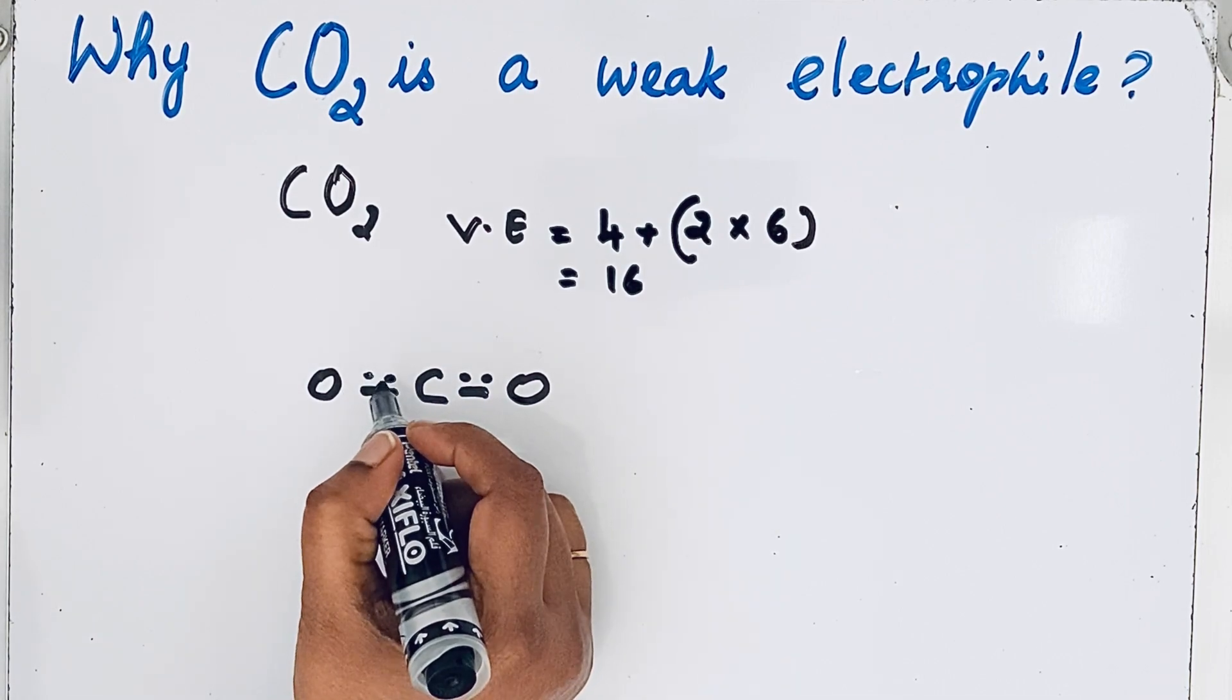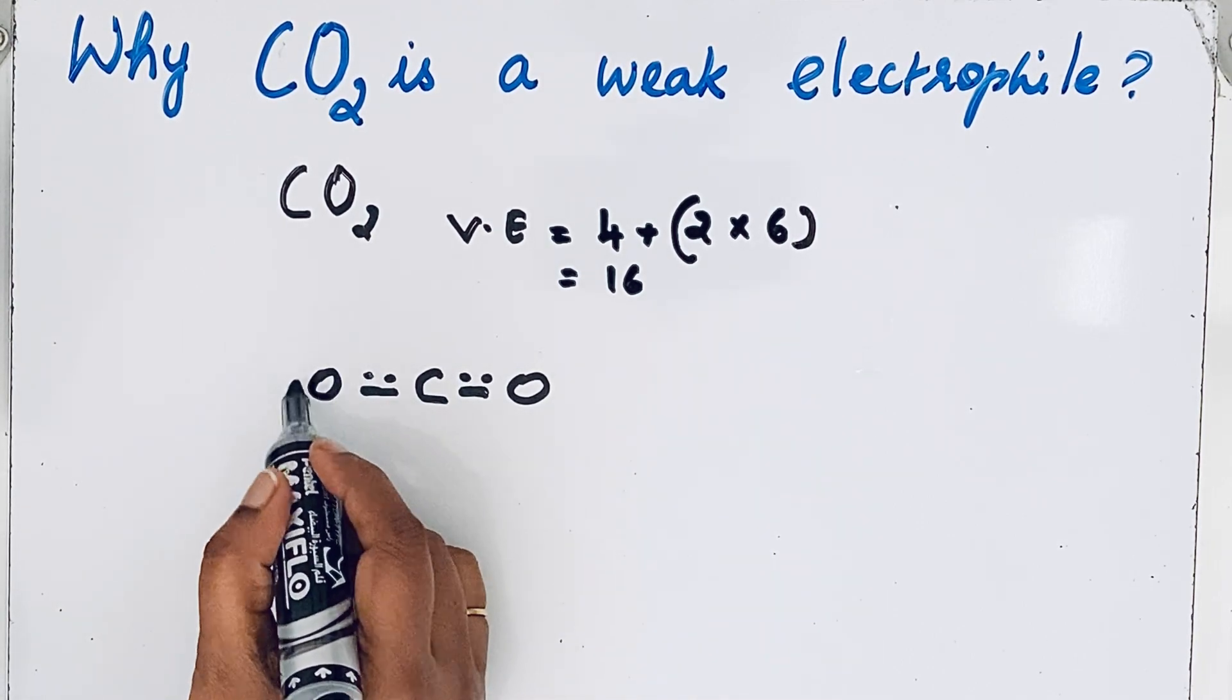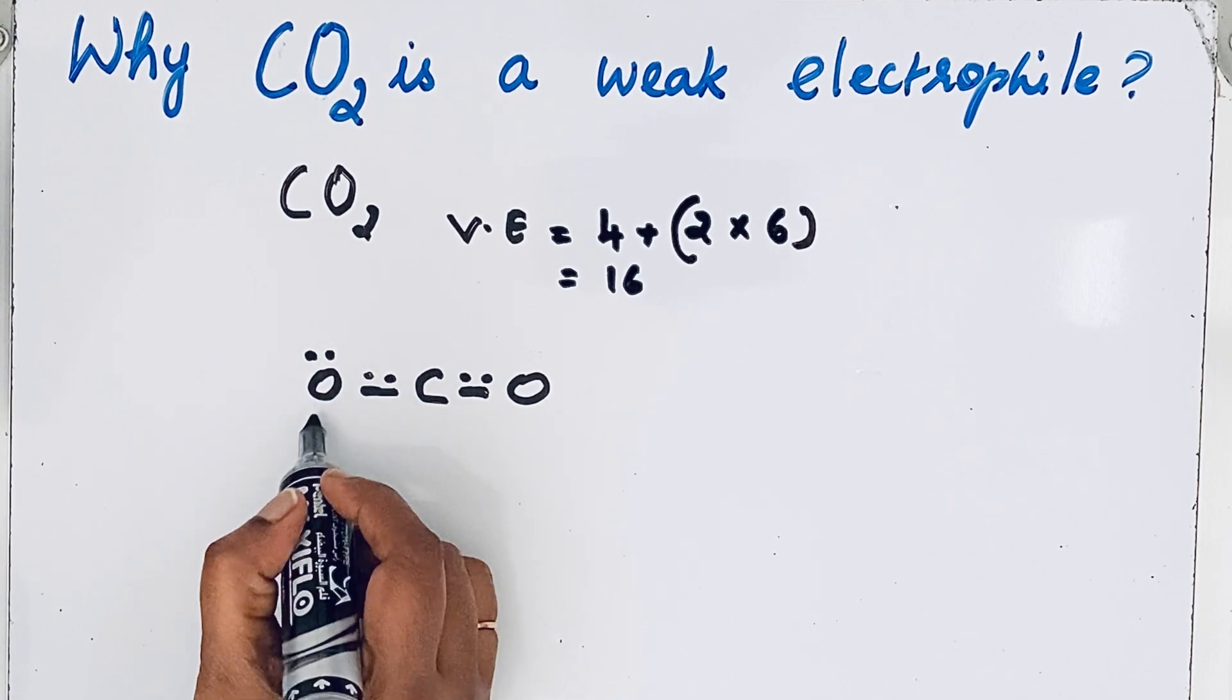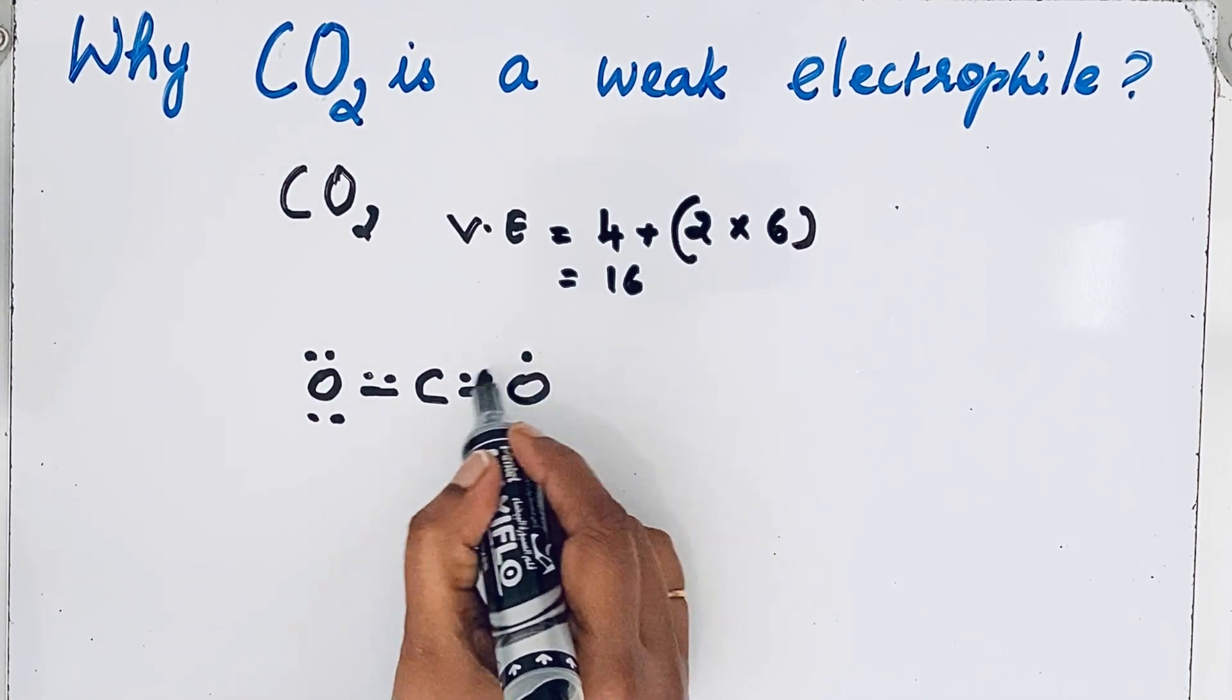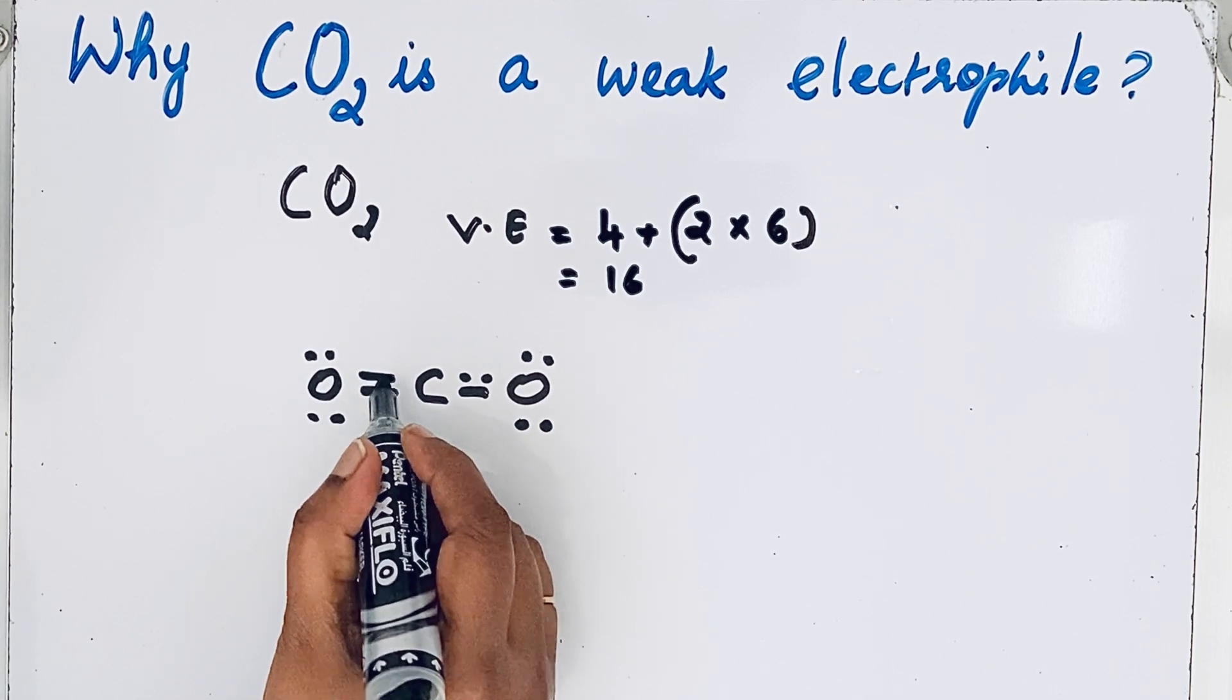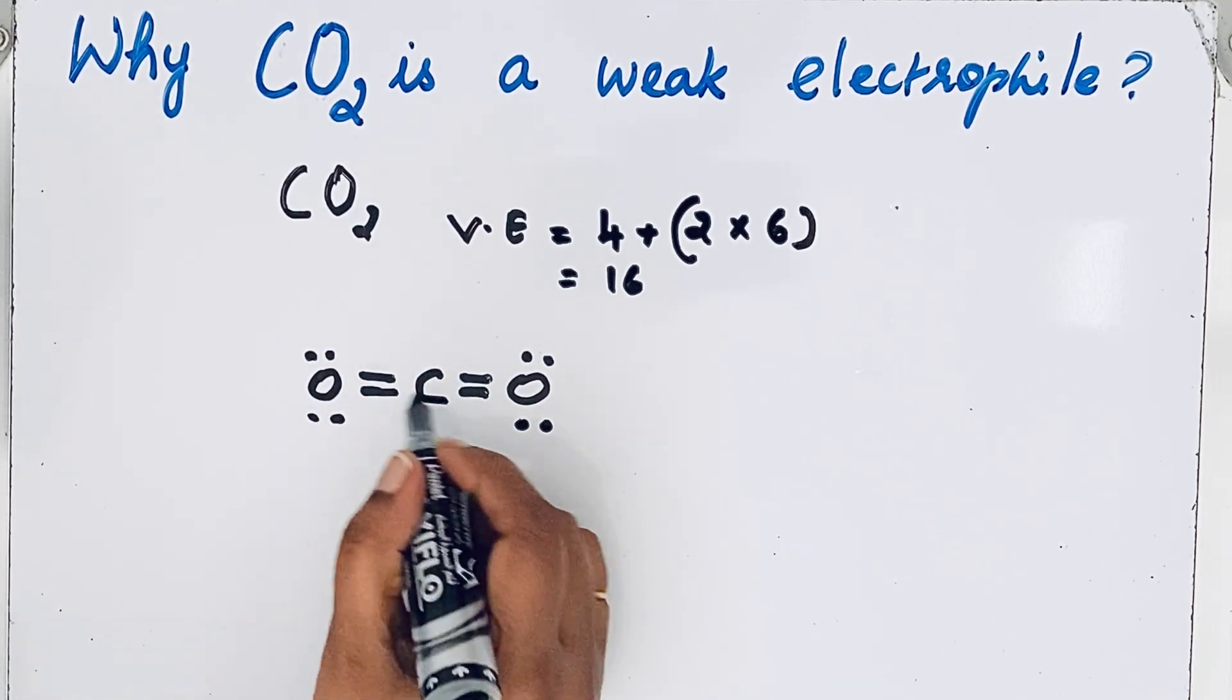Oxygen is highly electronegative, so it also should satisfy the octet configuration. Already we have two plus four electrons, so six, eight. The same way for this oxygen: two, four, six, eight. We can make this like a line, which means a bond. So there are double bonds between carbon and oxygen.